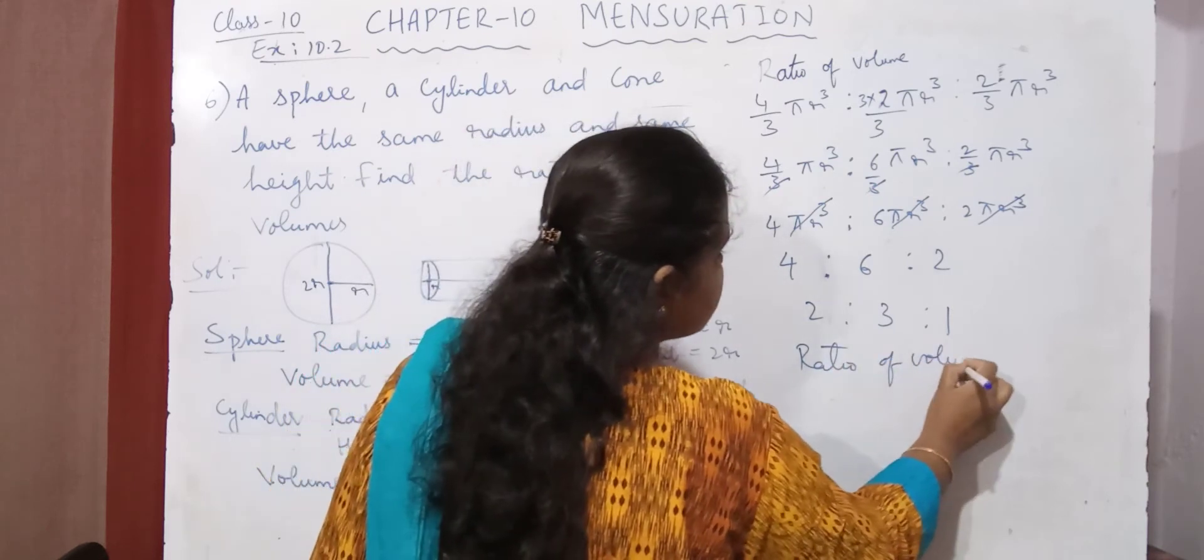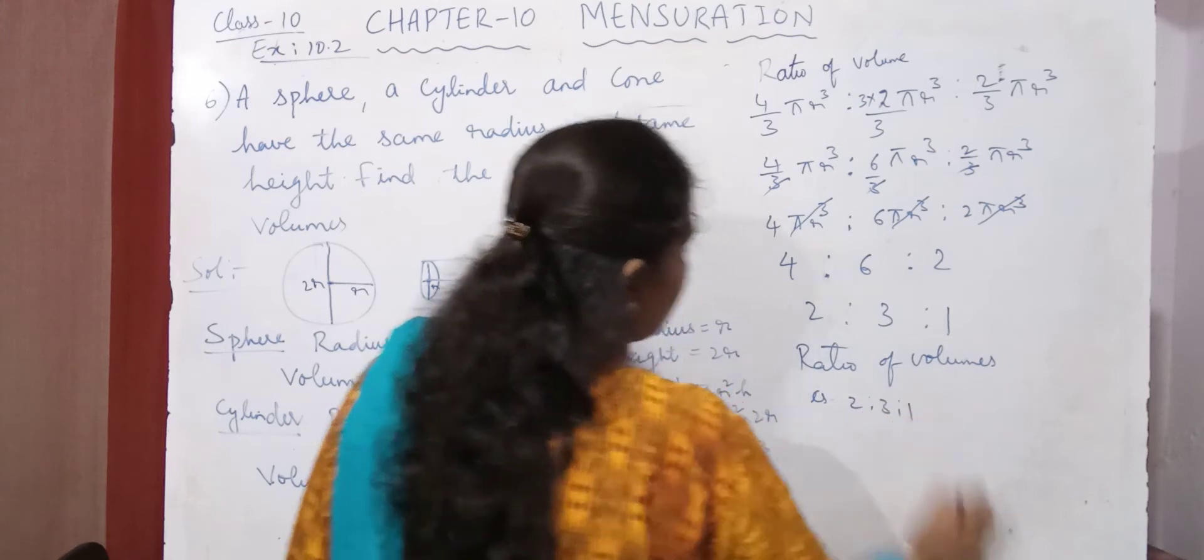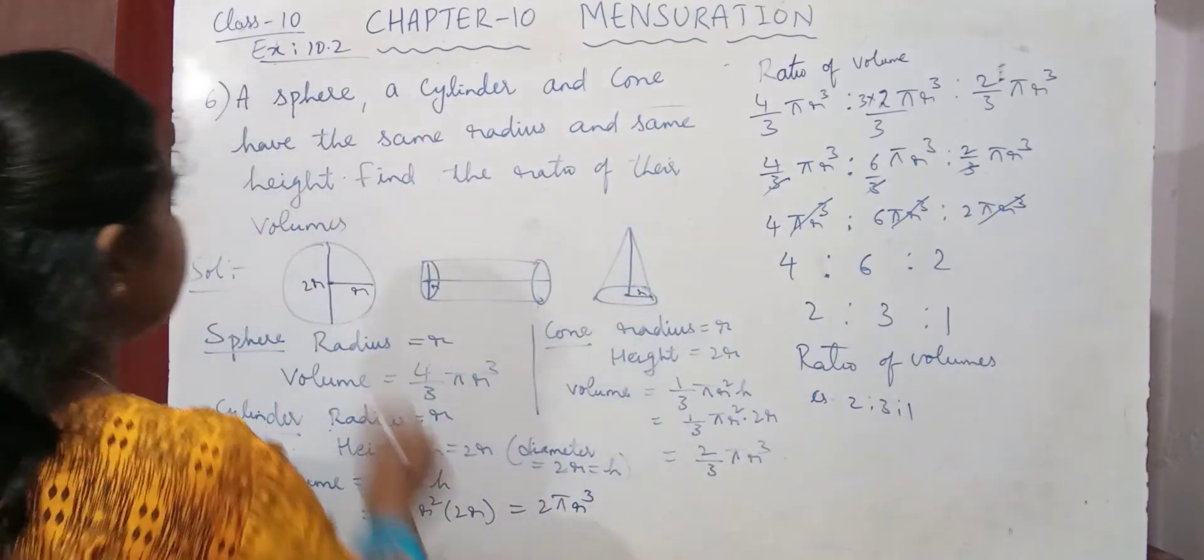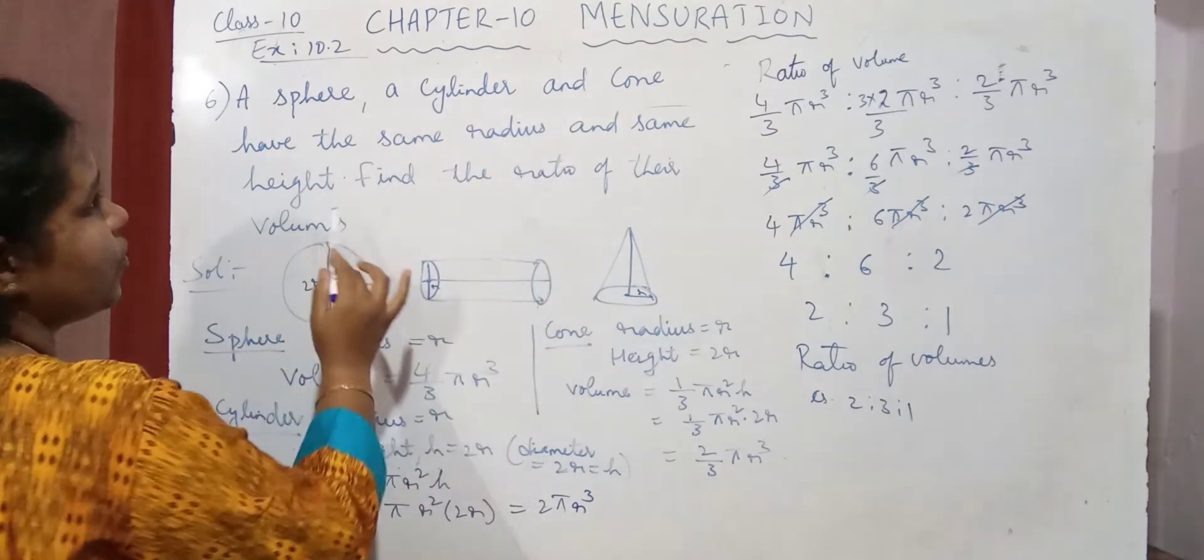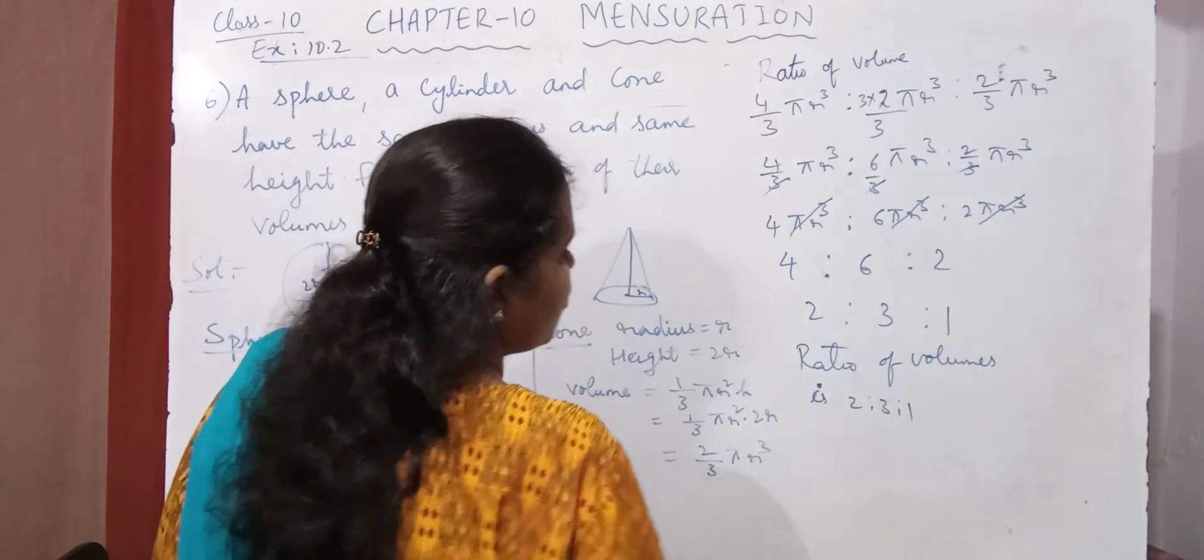Ratio of volumes is 2 is to 3 is to 1. That is if the radius and the height are same for the sphere, cylinder and cone, then the ratio of the volumes is 2 is to 3 is to 1.